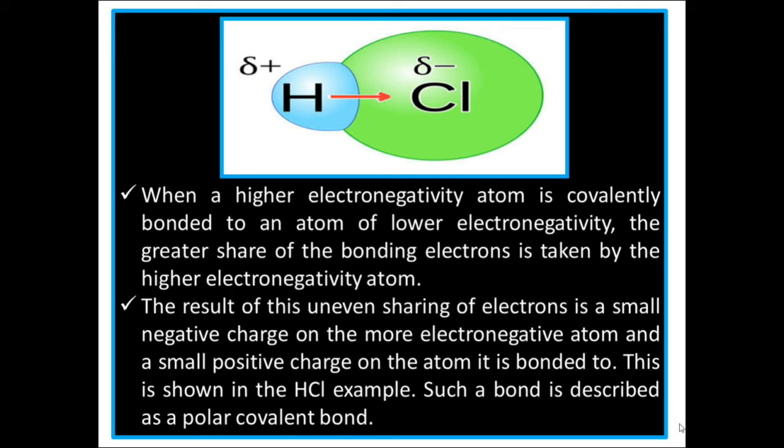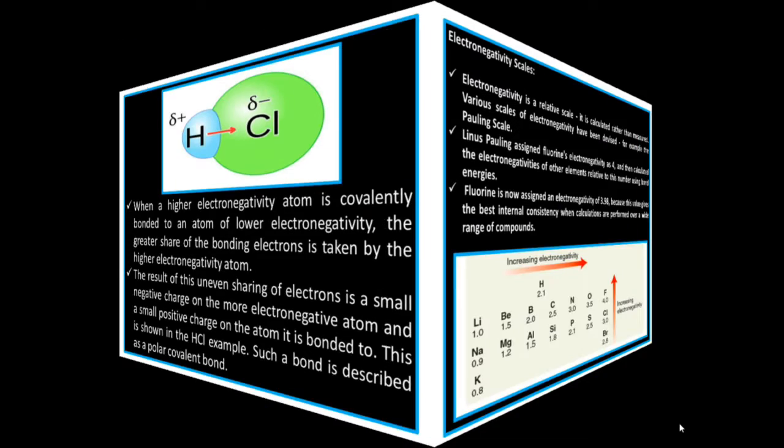When a high electronegative atom is covalently bonded to an atom of lower electronegativity, the greater share of the bonding electrons is taken by the higher electronegative atom. The result of this uneven sharing of electrons is a small negative charge on the more electronegative atom and a small positive charge on the atom it is bonded to. This is shown in the HCl example. Such a bond is described as a polar covalent bond.